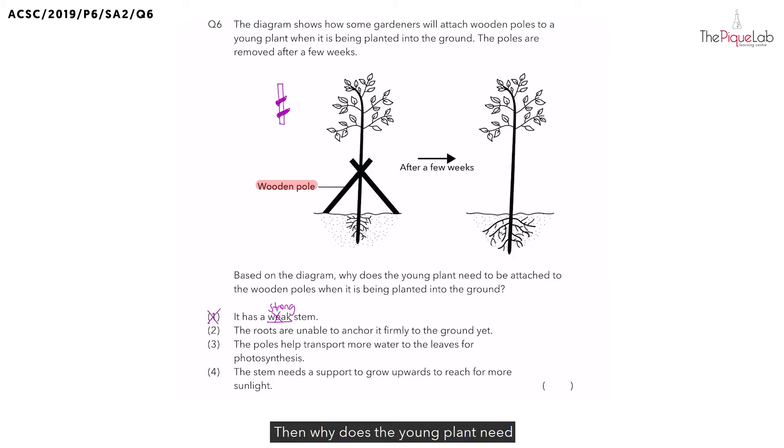Then, why does the young plant need to be attached to the wooden pole? To answer this, let's spot the difference between the plants before and after a few weeks. We can see that the difference lies in the length of the roots. Let's take a look at the plant on the left. The plant with the wooden poles has shorter roots. Let's recall what are the function of the roots. The roots help to absorb water and also anchor the plant firmly to the ground.